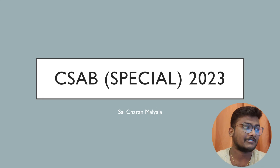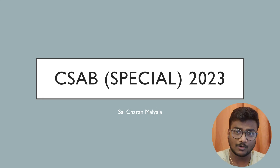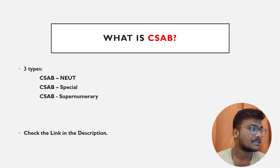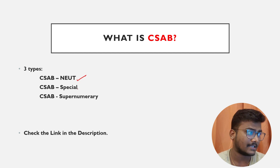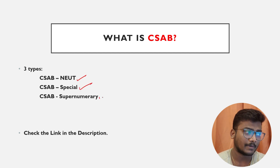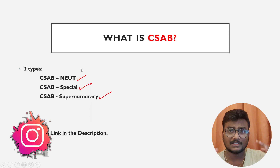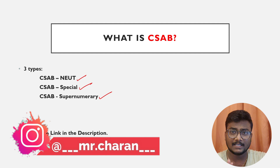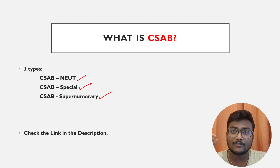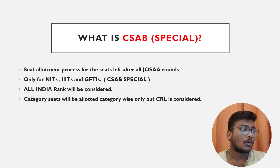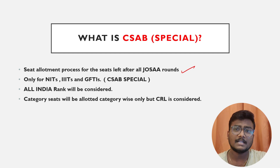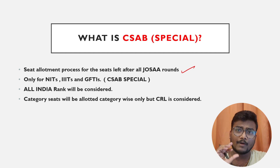CSAB Special 2023 is what I am going to talk about in this video. There will be three kinds of CSAB: first is CSAB NEUT (North Eastern and Union Territories), then special category, and supernumerary. The main focus is CSAB Special, which is almost similar to JoSAA, but the number of seats will be very less — only vacant seats left after six rounds of JoSAA will be given in CSAB Special.